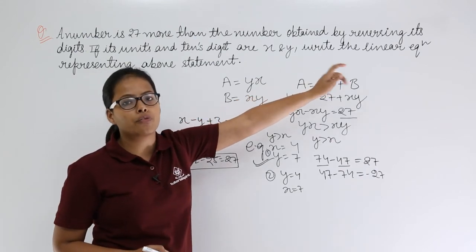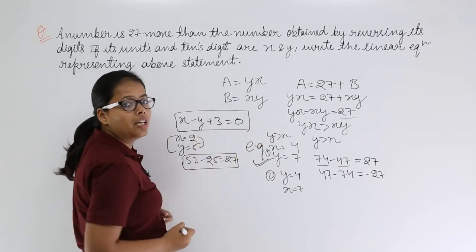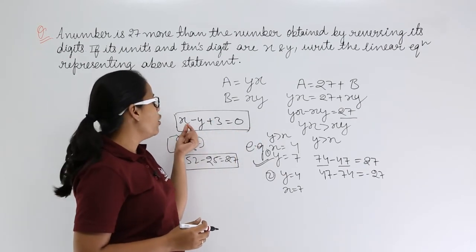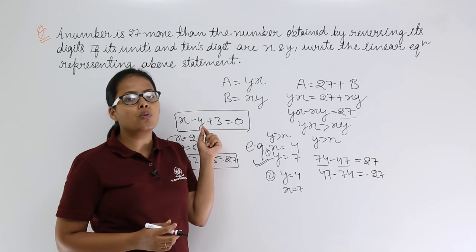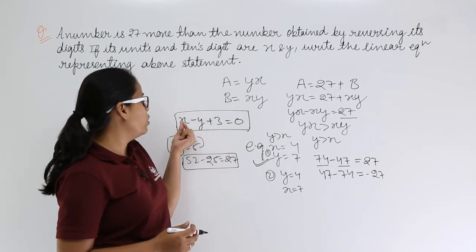Now here x minus y plus 3 is equal to 0, as you needed to find or needed to write a linear equation for this statement. So this is going to be a linear equation, as you are already familiar with the linear equation. Here degree of x and y needs to be equal to 1.